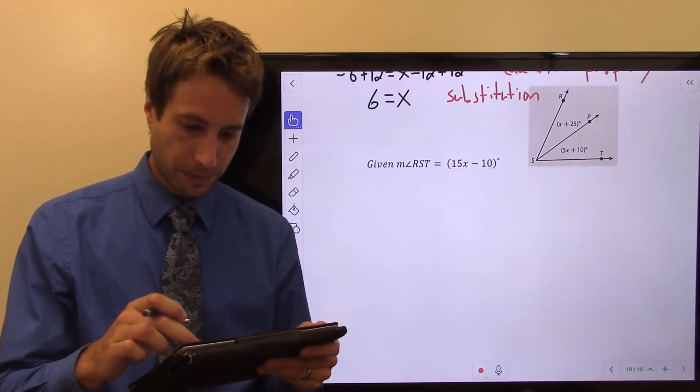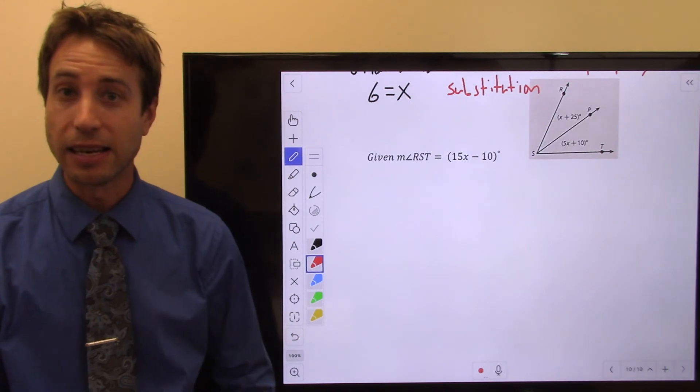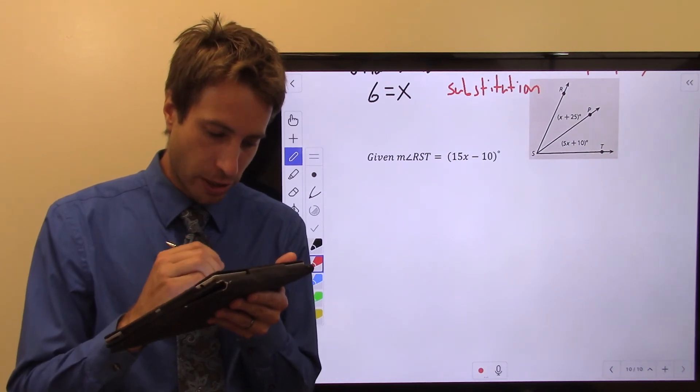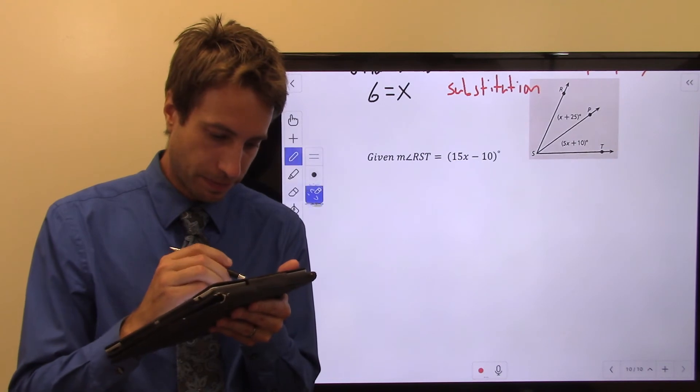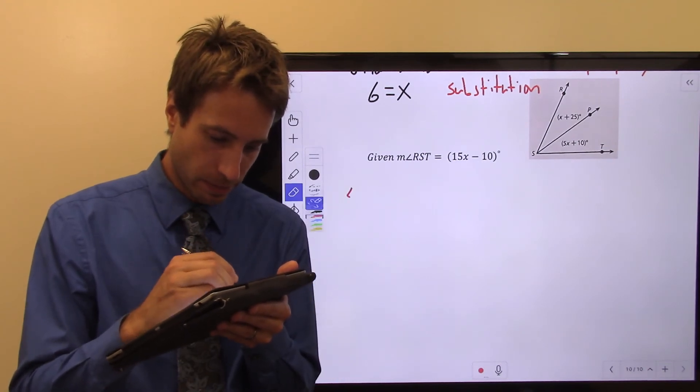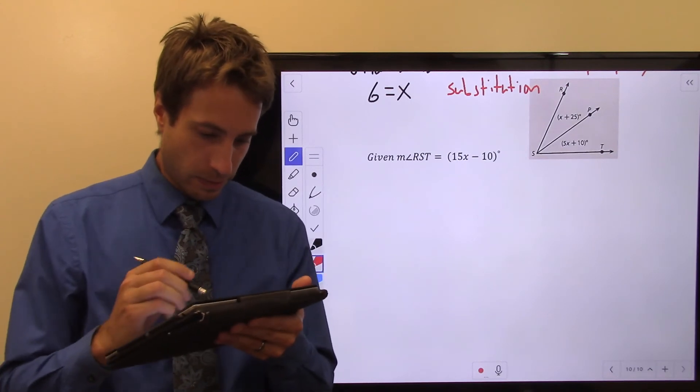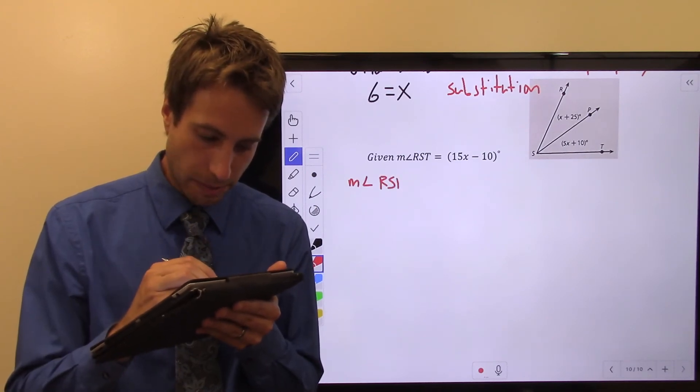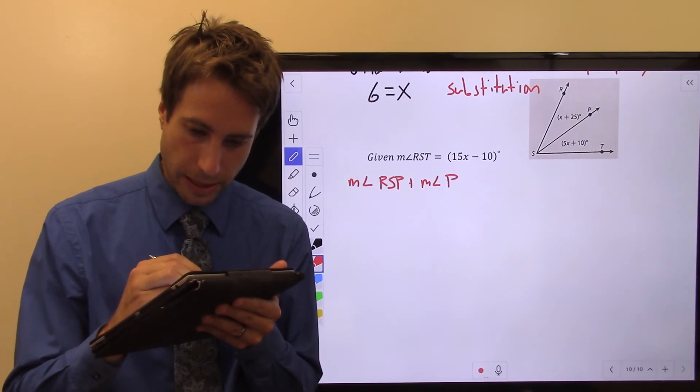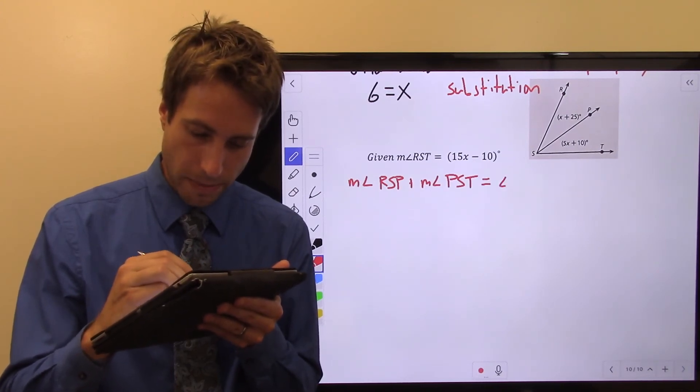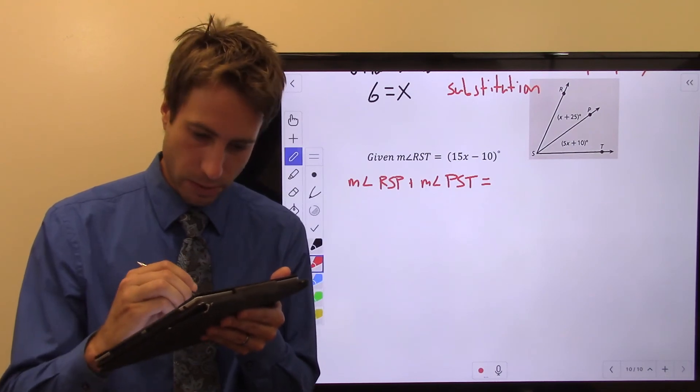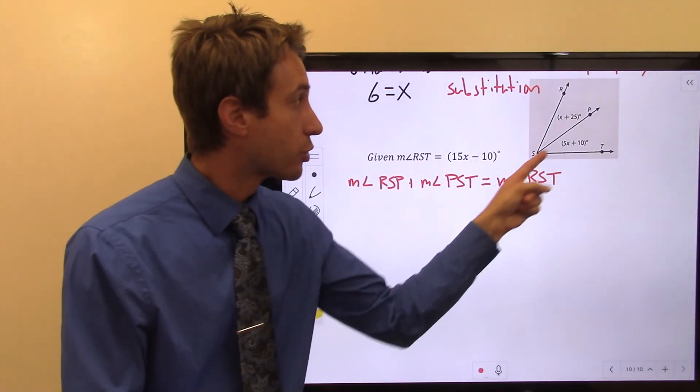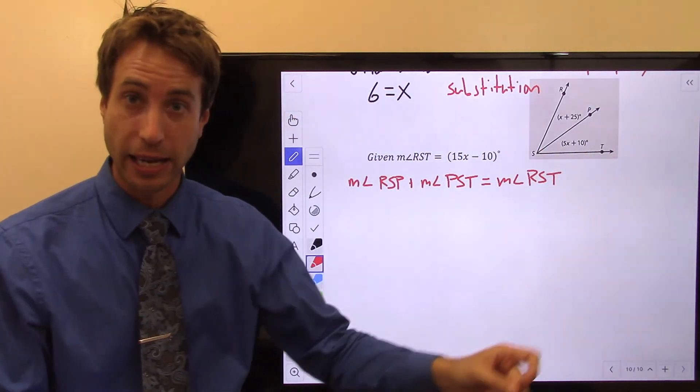I got one last one for us here. This is going to be that angle addition postulate. So, here we go. Here's what I know from the angle addition postulate. I know that the measure of angle RSP plus the measure of angle PST has to be equal to the measure of angle RST. The two smaller angles have to sum together to get me the larger angle.